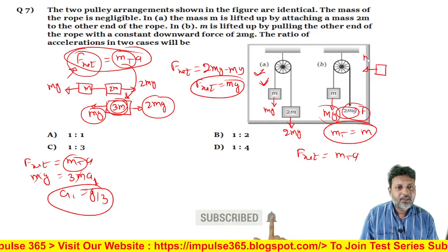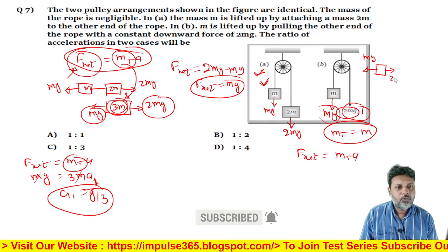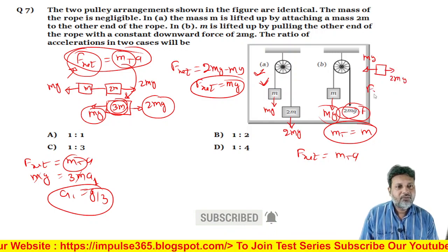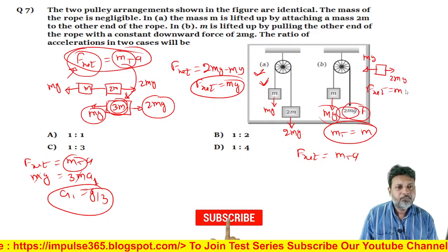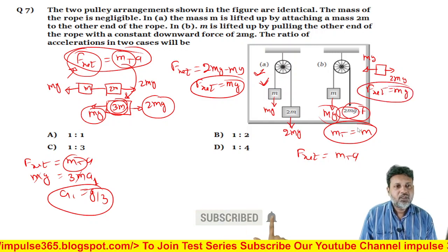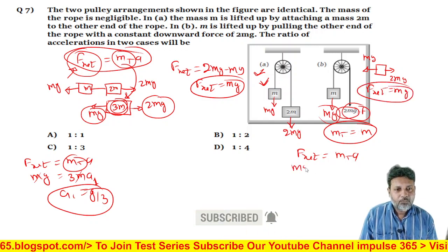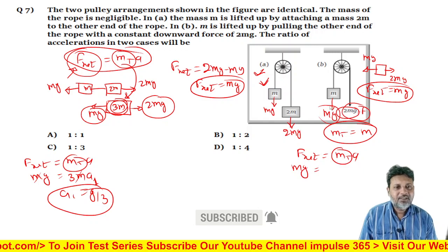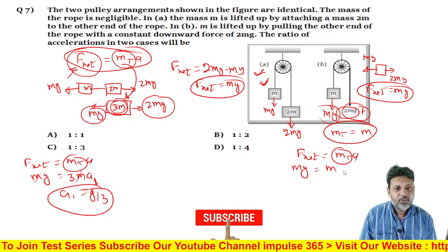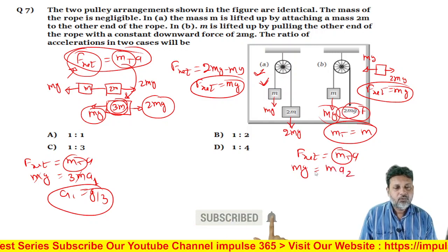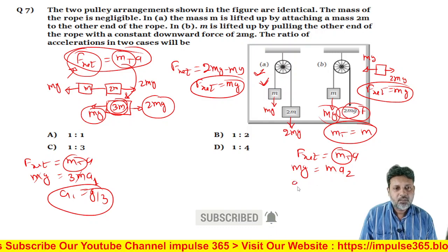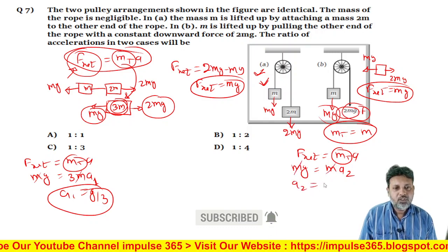To ismein left side mein MG lag raha hai, right side mein 2MG lag raha hai. To F_net ki value to MG ke equal hogi. Phir se bhai MG ke equal hogi. Ab yahan MG yahan put kar diya, total mass kitna hai, is system ka sirf ek single M, into A2 isko kaha diya. To A2 is equal to G ke equal ho jayega.